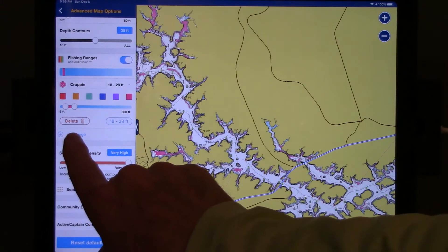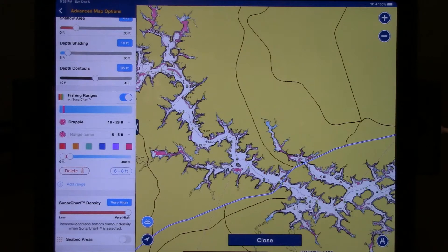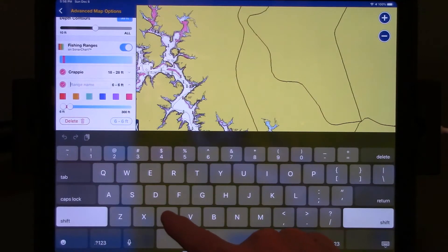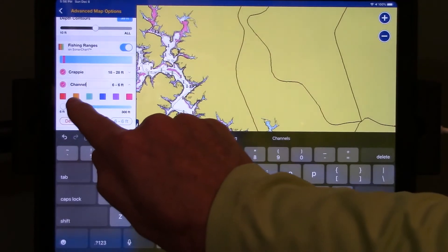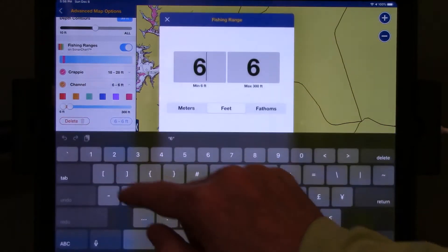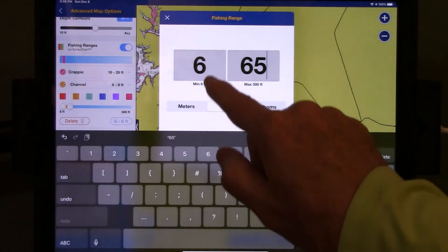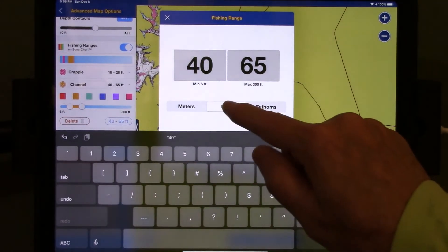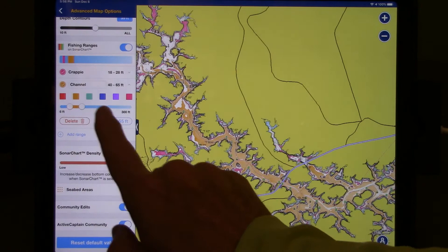The next thing that I want to select is add range, because the fishing report that I read mentioned I should be looking for fish in 18 to 28 feet that are near a channel. So I'm going to create another area called channel, and I'm going to make that color gold. I'm going to set my depth as deep as 65 feet, but at least 40 feet. So 40 to 65 feet will be my channel indicator, and those are also turned on.